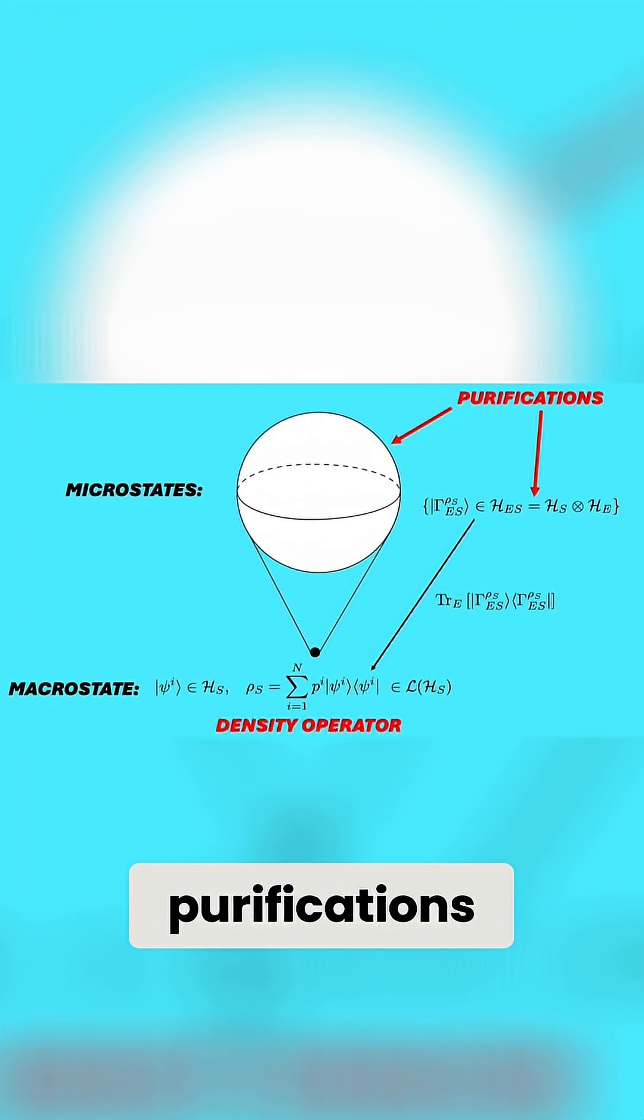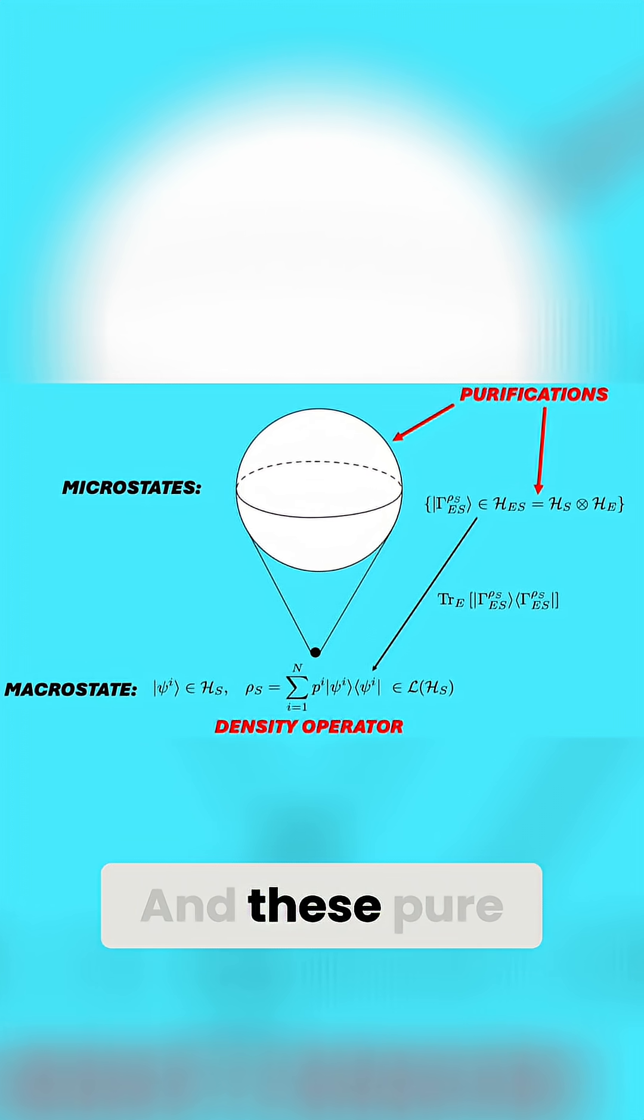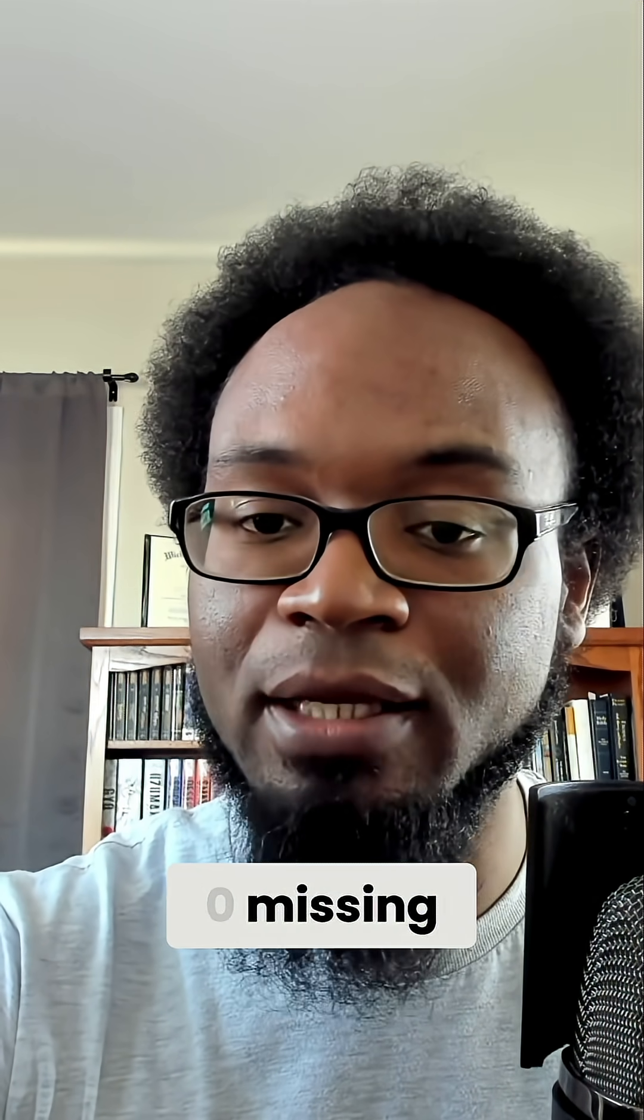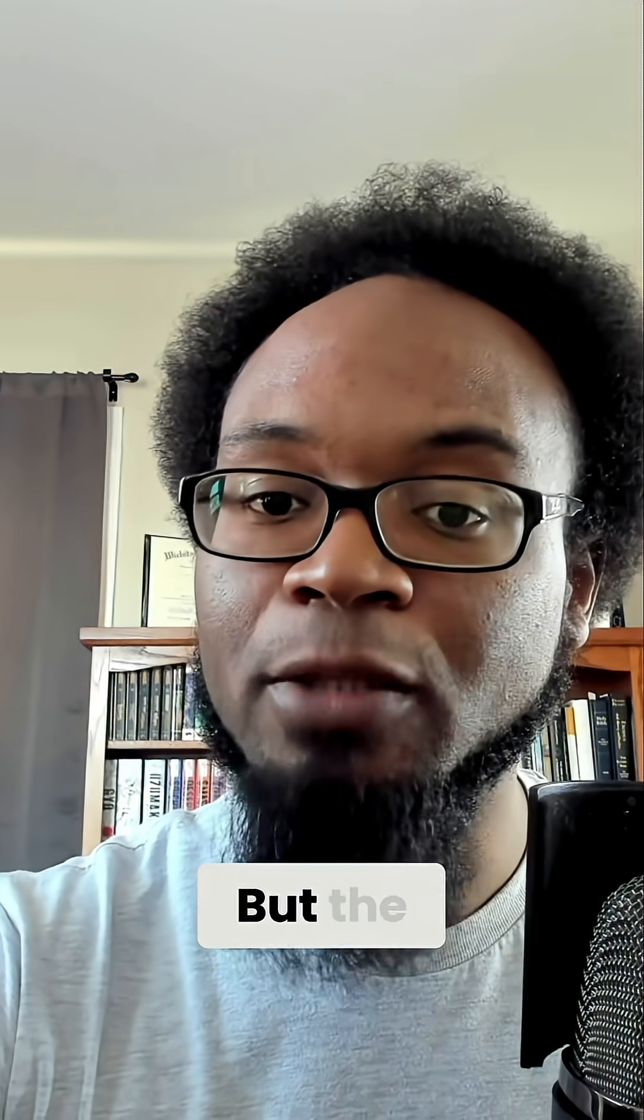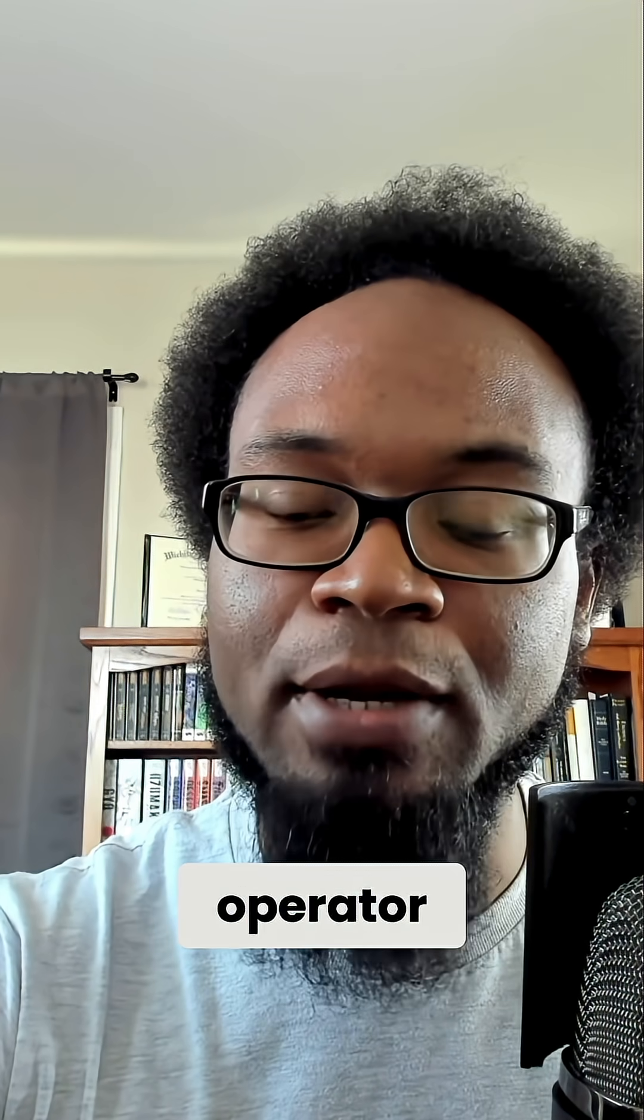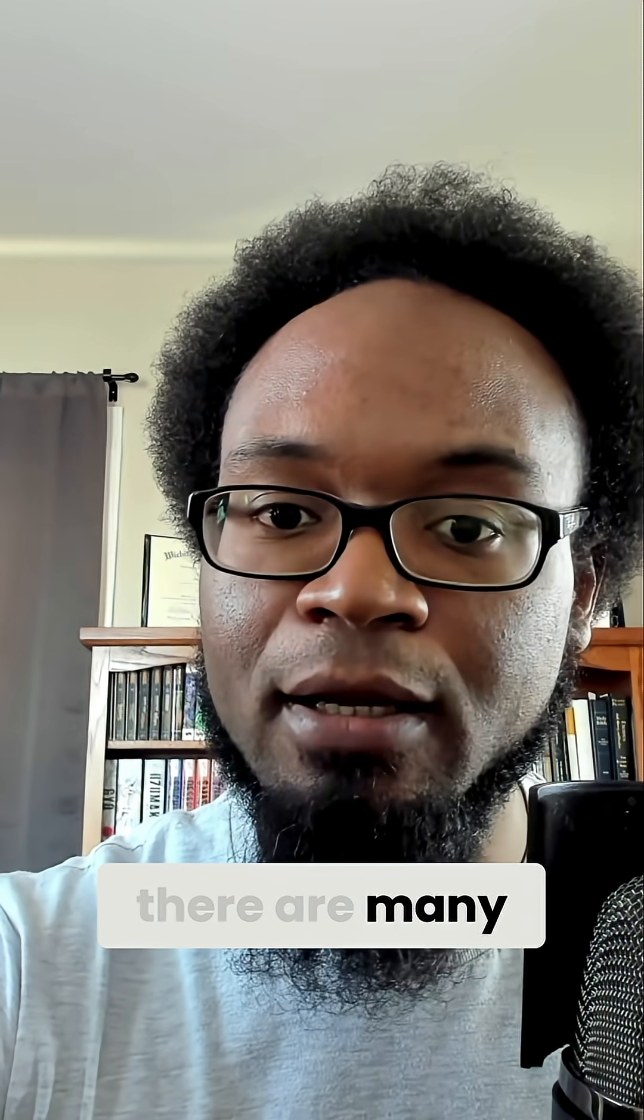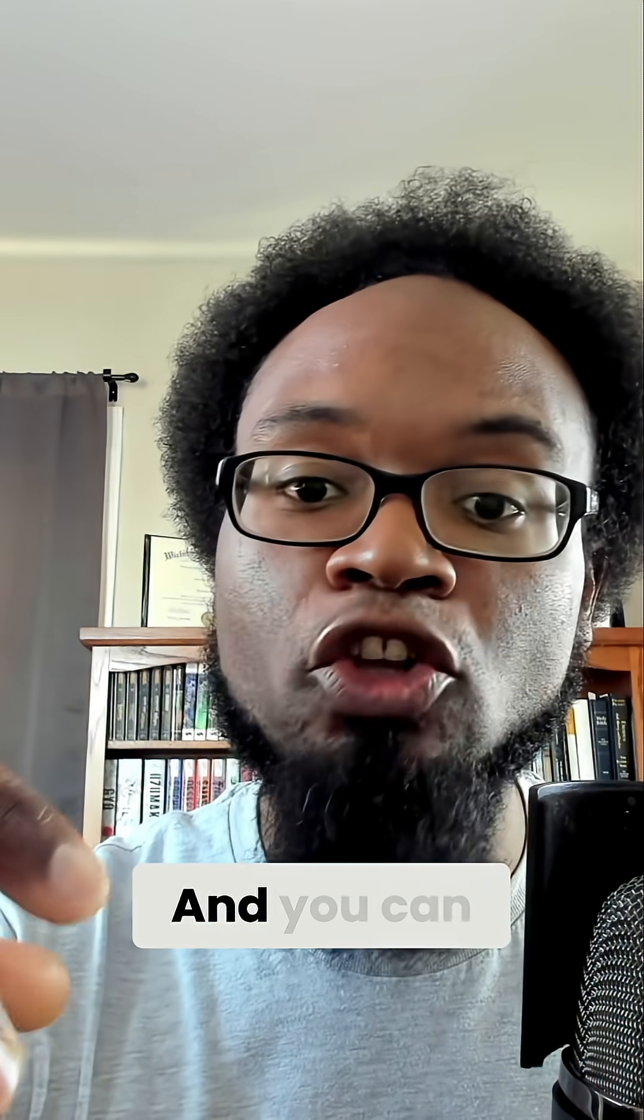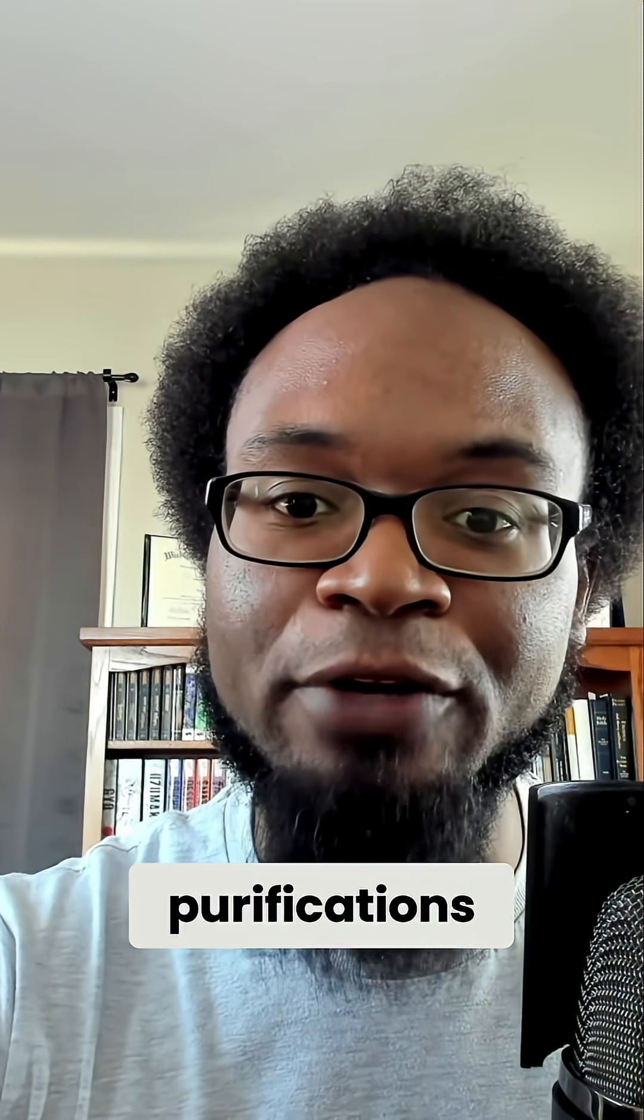And we call these purifications. And these pure states, these purifications, they have zero entropy. So that means they have zero missing information. But the problem is that for any density operator, there are many purifications associated with that density operator. And you can generate these purifications using these things called Lie group symmetries.